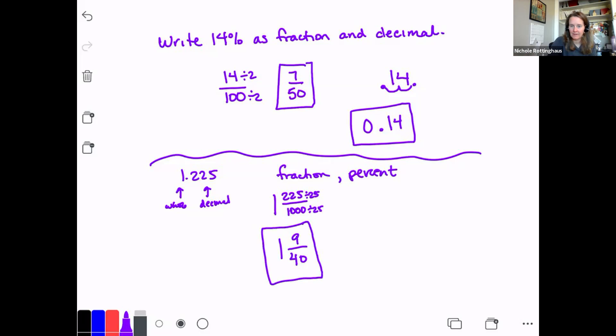Okay. Now let's write it as a percent. To write a decimal, this is a decimal, even though it's a big decimal, but it's a decimal. To write it as a percent, we move the decimal place two places to the right. And we add the percent sign. So I'm going to go one, two, and I have 122.5 percent.